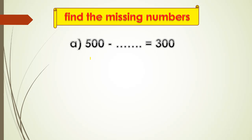Here: five hundred minus what equals three hundred. Any missing number I will make minus. When I make minus: big number on top, small number on the bottom.